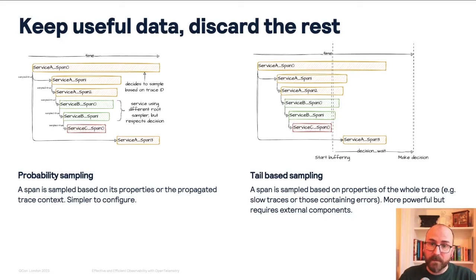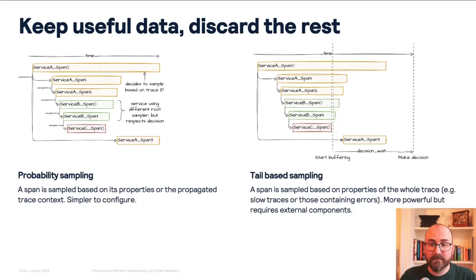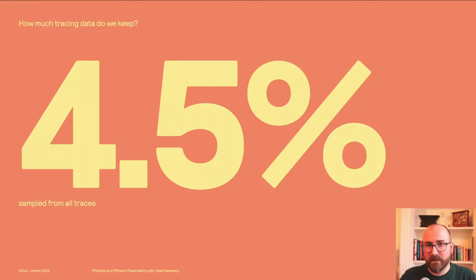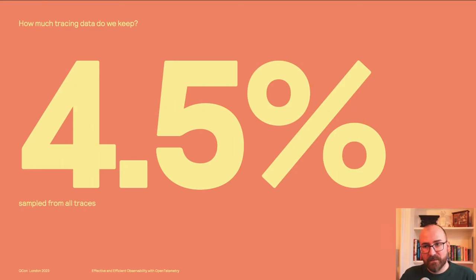That can be done with an OpenTelemetry collector where you can route traces to particular collectors, or you can use a vendor — there are multiple vendors that provide tail-based sampling capability. At Skyscanner, this allows us to store only about 4.5% of all our traces. We store the ones that matter: the ones that are slower than usual or contain errors, plus a random percentage of the rest. You can see how we're keeping only the valuable data and reducing costs.